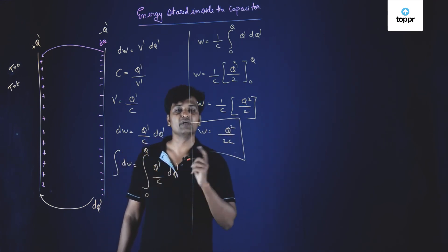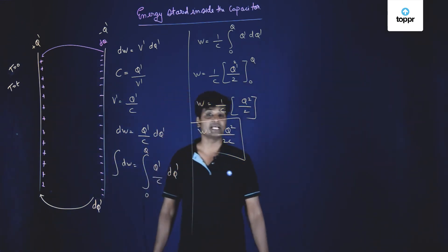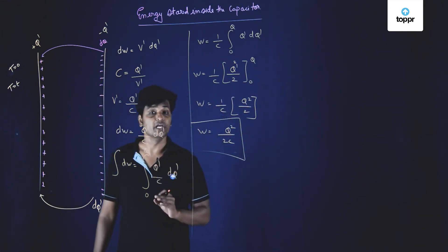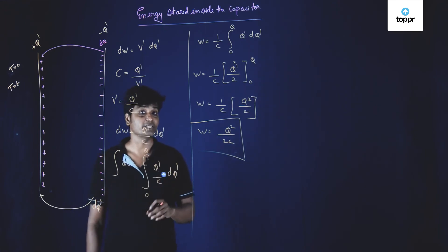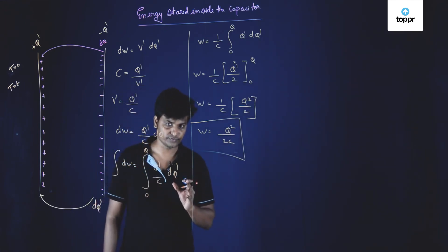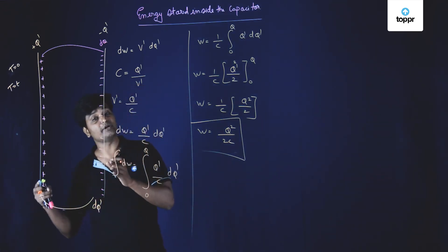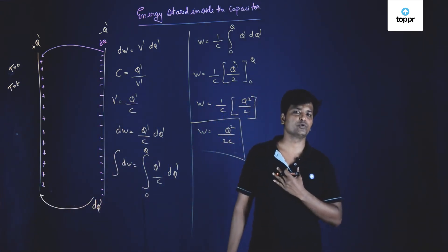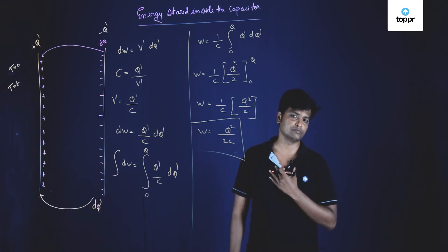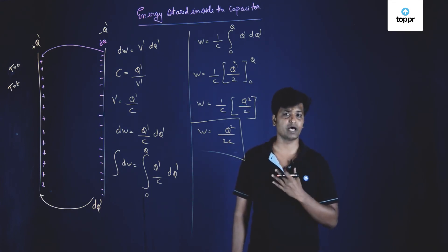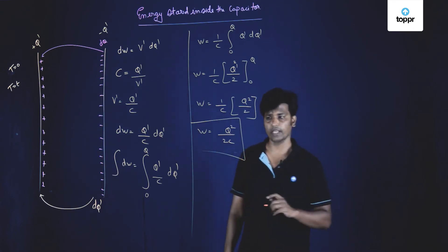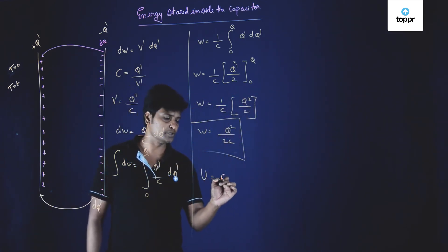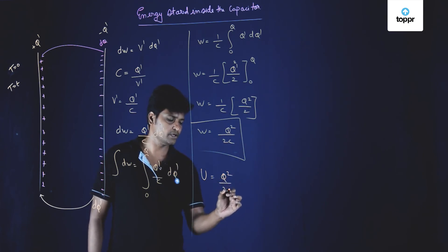This work done gets stored inside the capacitor in the form of electric potential energy, meaning the capacitor is now completely charged and this electric potential energy can be used suddenly as per our demand and requirement. So, the electric potential energy U = q²/2C, which is the energy stored inside the capacitor.